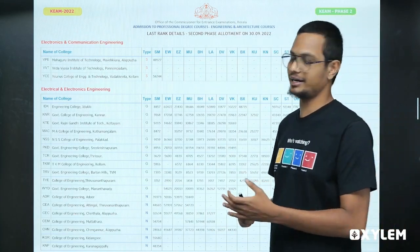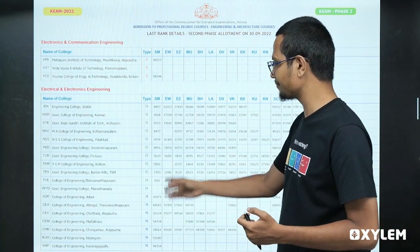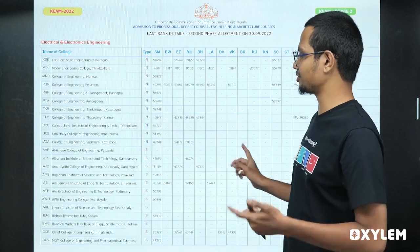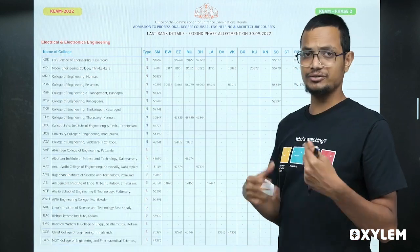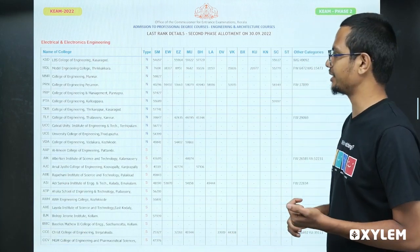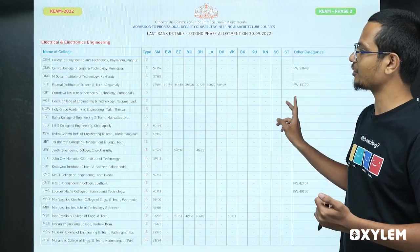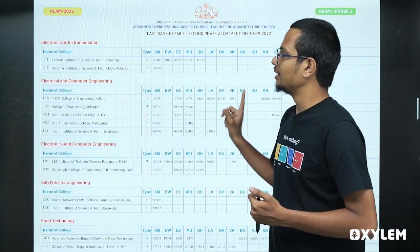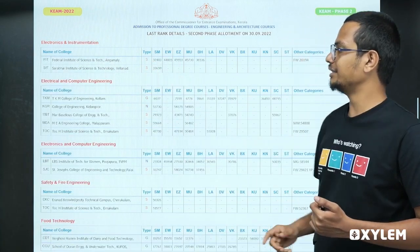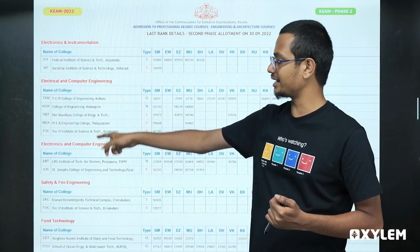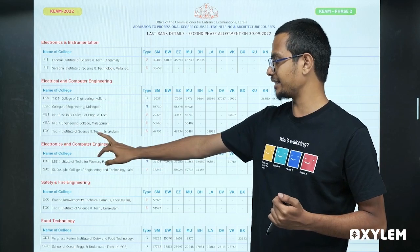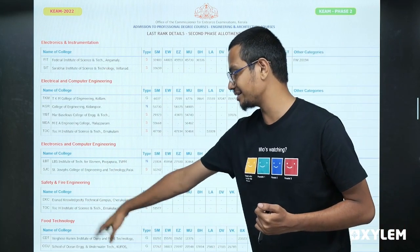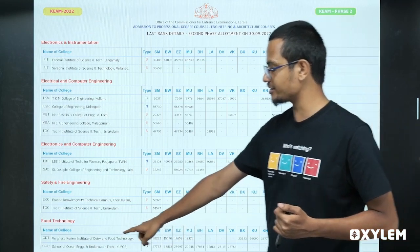Basic engineering courses include civil, electrical, and mechanical. If you have any last-rank details, there are a lot of details in each course. The course options also include Electronics and Instrumentation, Electrical and Computing Engineering, Electronics and Computing Engineering, Safety and Fire Engineering, and Food Technology.